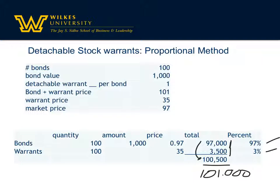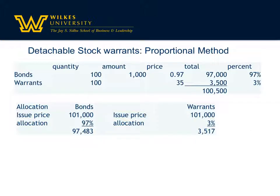Taking $97,000 divided by $100,500 gives us 97%, and $3,500 divided by $100,500 gives us 3%. Remember, this is one case where you really need to make sure your total percentages add up to 100%. So the proportional amount paid is: 97% goes to the bonds and 3% goes to the warrants. Taking $101,000 times 97% gives $97,483 for the bonds, and $101,000 times 3% gives $3,517 for the warrants.